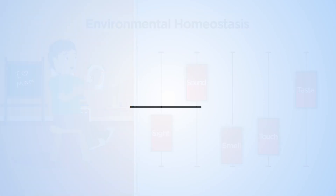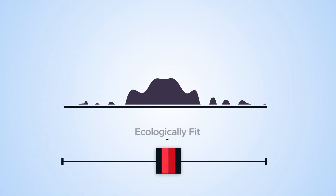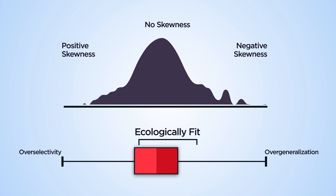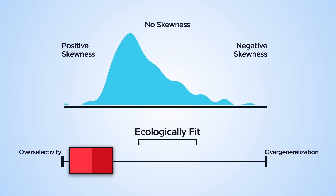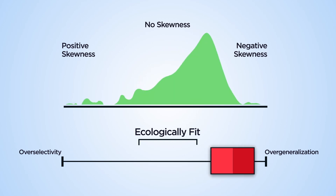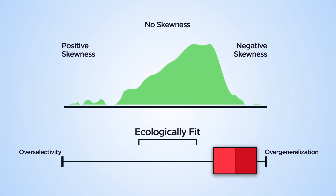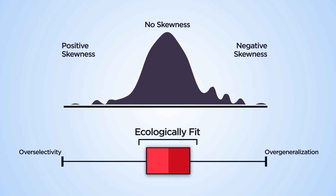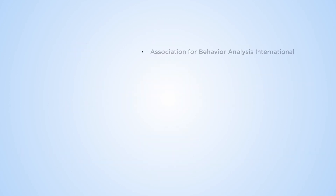Different contingency histories make each individual with autism unique, but an understanding of autistic stimulus control may lead to behaviour analytic interventions that shift skewed response populations towards a normal distribution. For more information on applied behaviour analysis, please visit the following links.